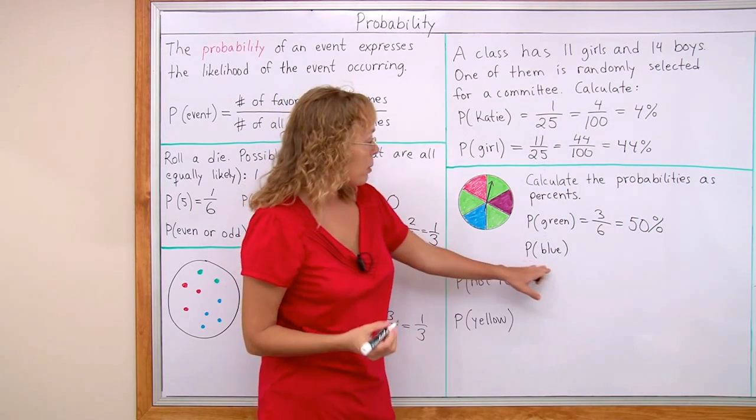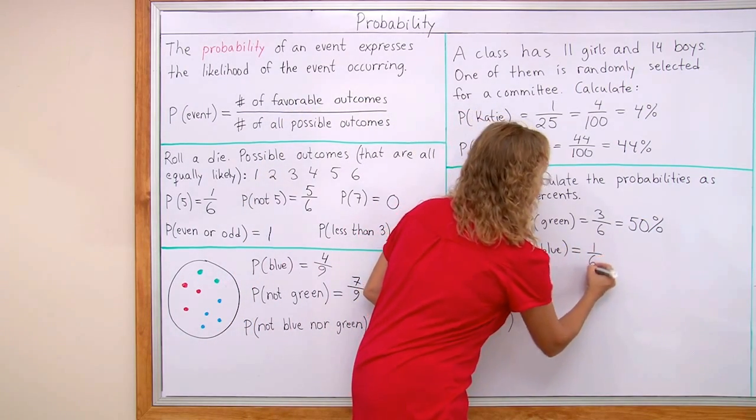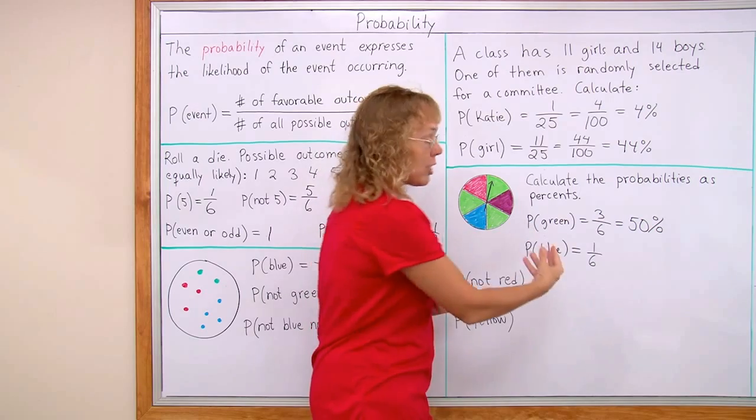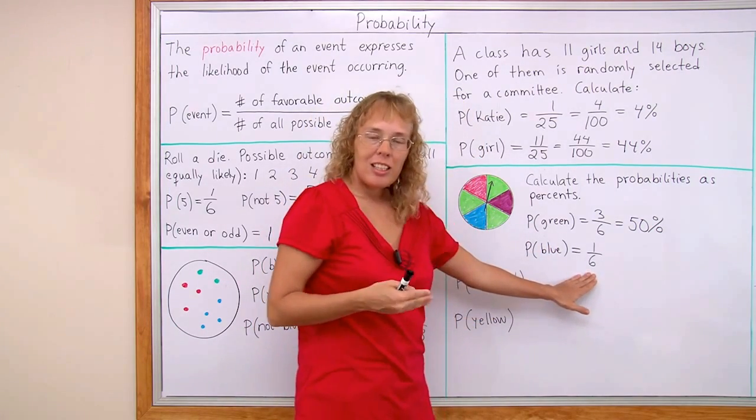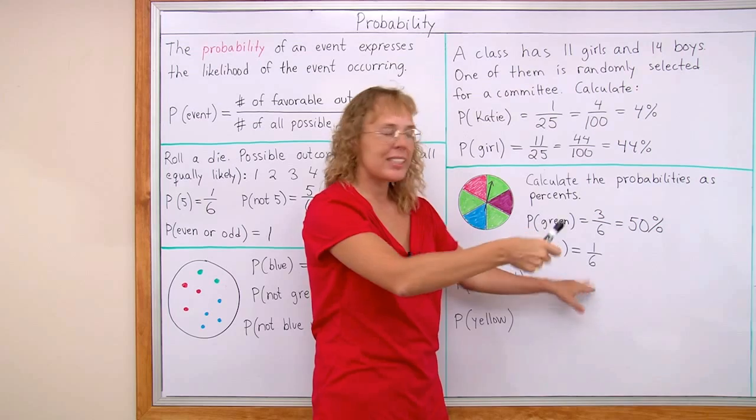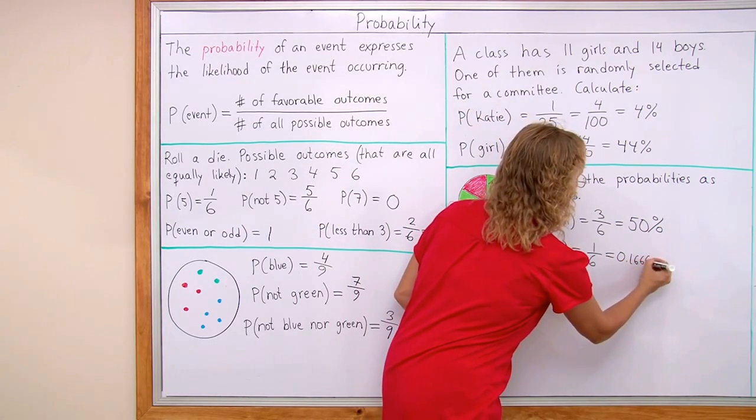The probability of spinning blue. Now there's just one favorable outcome. So we get one sixth as a fraction. And now we change this into a percent. You remember how? You can use a calculator and divide. One divided by six. It gives you this decimal. Zero point one six six six six.